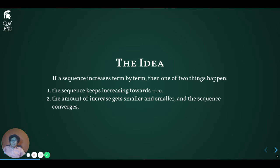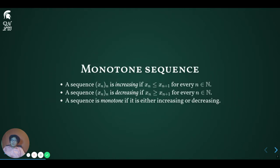The rest of this lecture is aimed at making this basic idea precise. To begin with, we need to be precise about what we mean for a sequence to be monotone. A sequence is increasing if the next term x sub n+1 is always at least as large as the current term x sub n. A sequence is decreasing if the next term x sub n+1 is always no larger than the current term x sub n. A sequence is monotone if it is either increasing or decreasing.